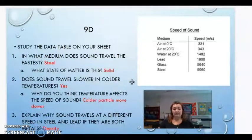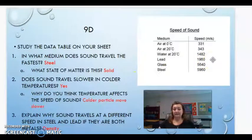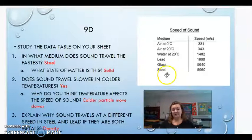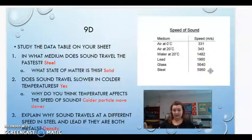Explain why sound travels at different speeds in steel and lead if they are both metals. So if we're looking over here, here's lead at one thousand nine hundred and sixty. Sorry for the bell. And then here's steel at five thousand nine hundred and sixty. So quite a difference, even though they're both solids, they're both metals. So really, what's the difference? Why is speed traveling faster in steel?